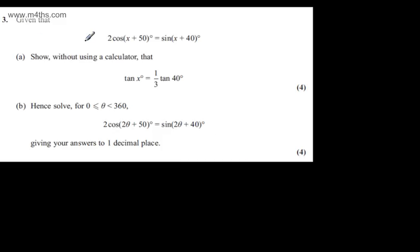This is question number 3. It says given that 2 cos(x + 50°) equals sin(x + 40°), in part A for four marks, show without using a calculator that tan(x°) equals 1/3 tan(40°).